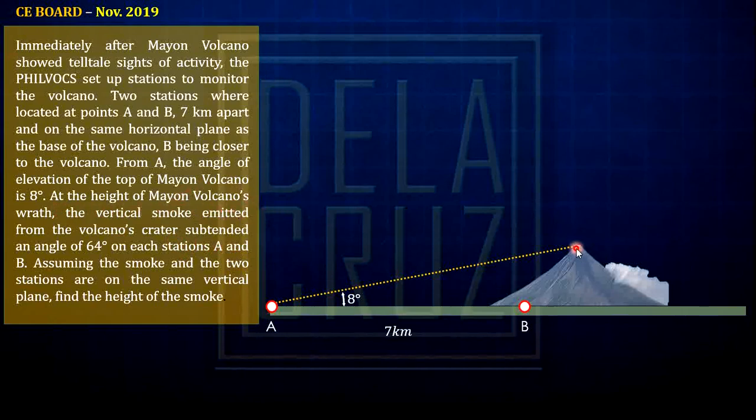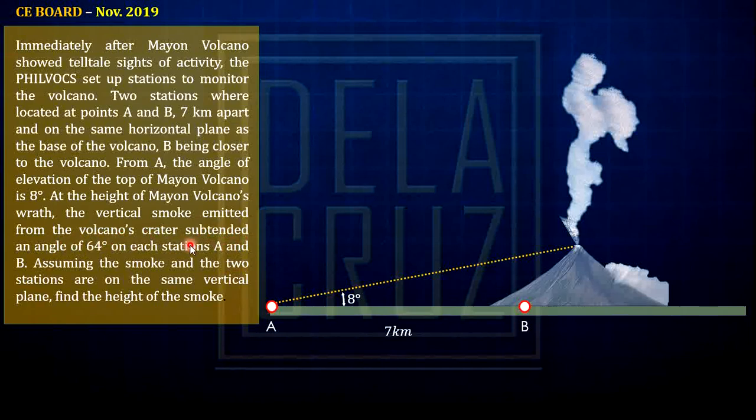Next, at the height of the Mayon volcano, from the volcano's crater, this is the crater, the subtended an angle of 64 degrees on each station. By the way, at the height of the Mayon volcano's wrath, the vertical smoke emitted from the volcano's crater. And it says that it subtended an angle of 64 degrees on each station A and B. So from this A, it subtends an angle of 64 degrees, and it is the same on point B - this is 64 degrees.